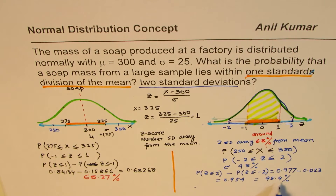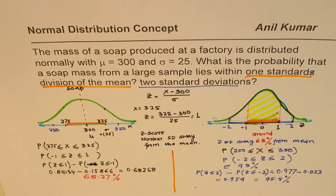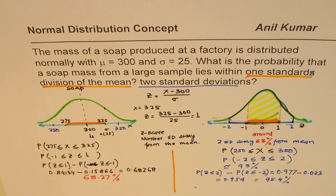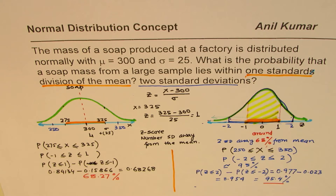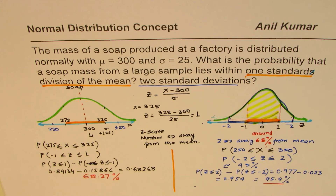From the calculation using the tables, we get almost the same result — the probability of the random variable being within two standard deviations is 95.4%. Whatever the given mean or standard deviation, the answer is always 95.4% — that is the beauty of normal distribution curves, and why standardized curves can always be used. I'm Anil Kumar, and I hope this simple example helps you understand the concept of linear translation to Z-scores and finding probabilities for any given normal distribution. Thank you, and all the best.